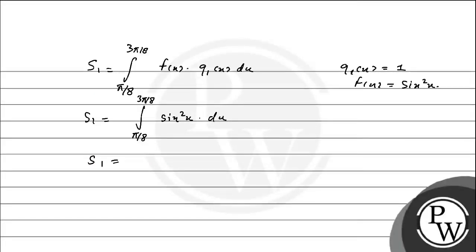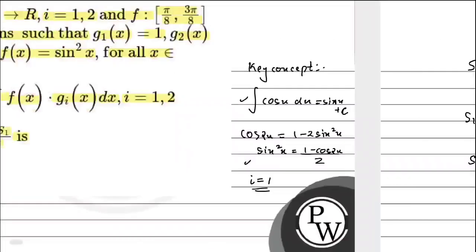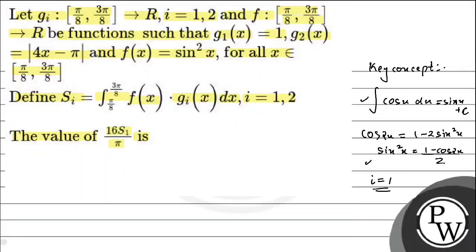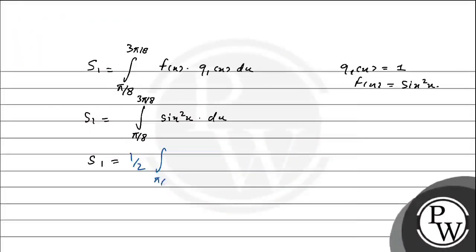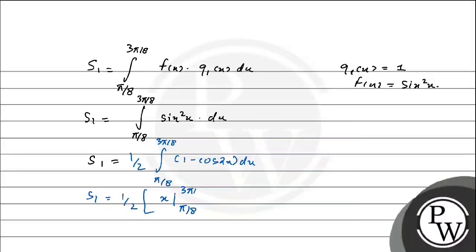अब हम S1 को solve करते हैं। sin²x का formula है (1 − cos 2x)/2, तो half बाहर हो जाएगा। S1 = (1/2) ∫(π/8 to 3π/8) (1 − cos 2x) dx. 1 का integration x होता है, और cos 2x का integration sin 2x / 2 होता है। Limits π/8 से 3π/8 तक apply करेंगे।